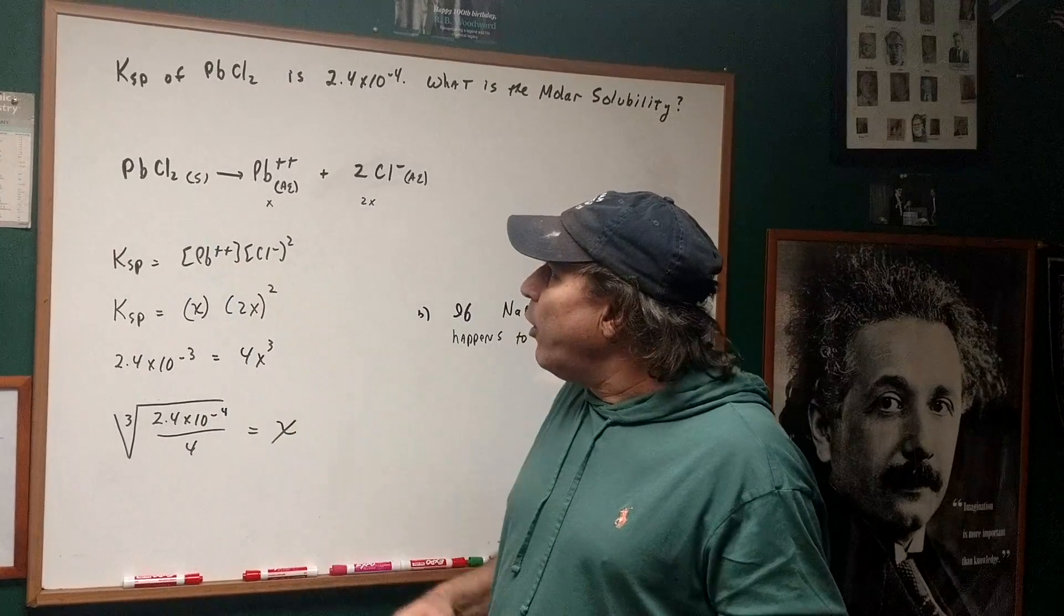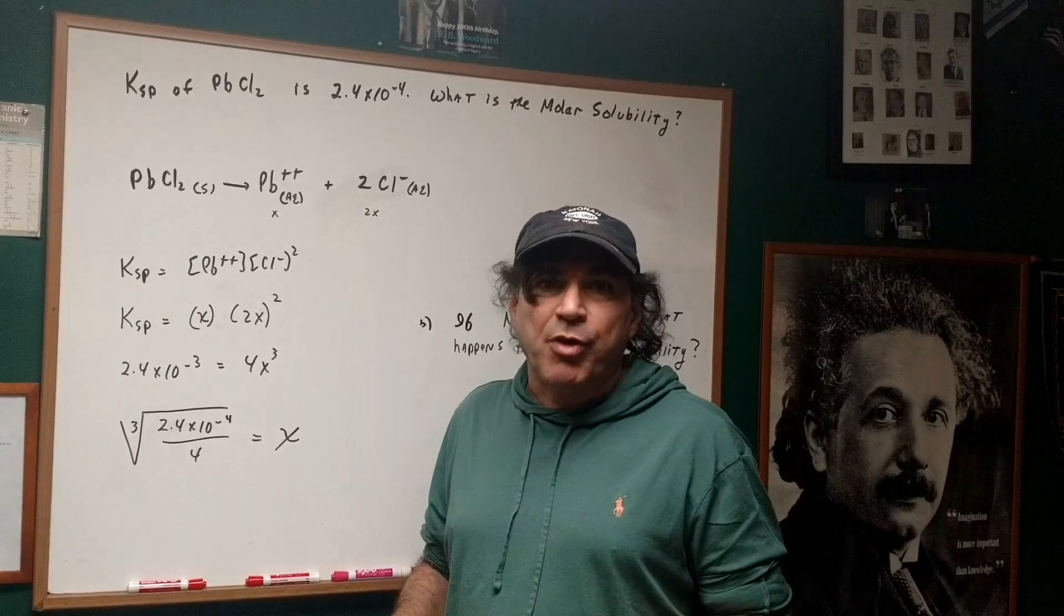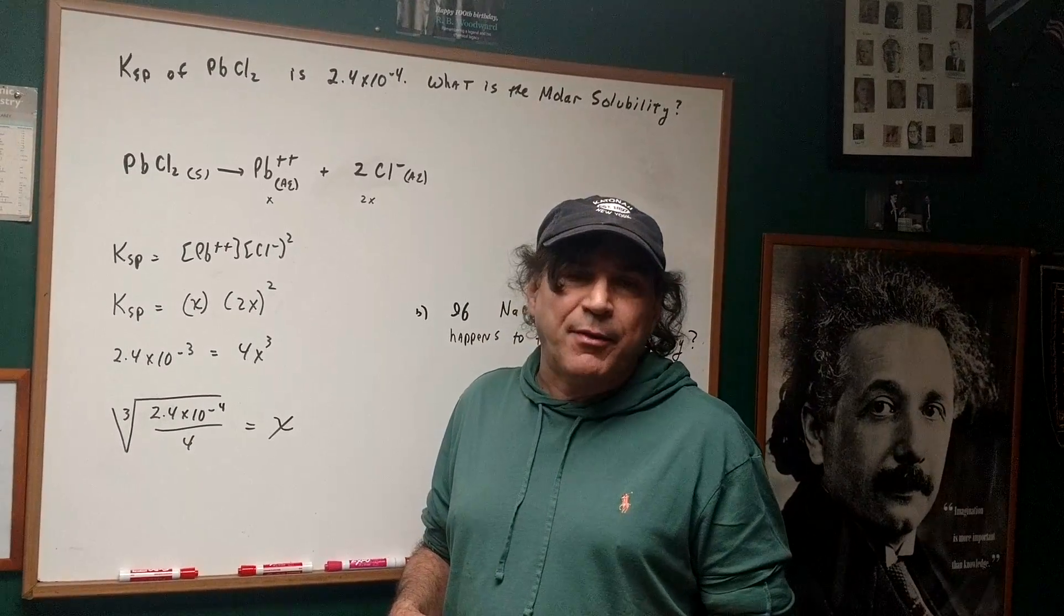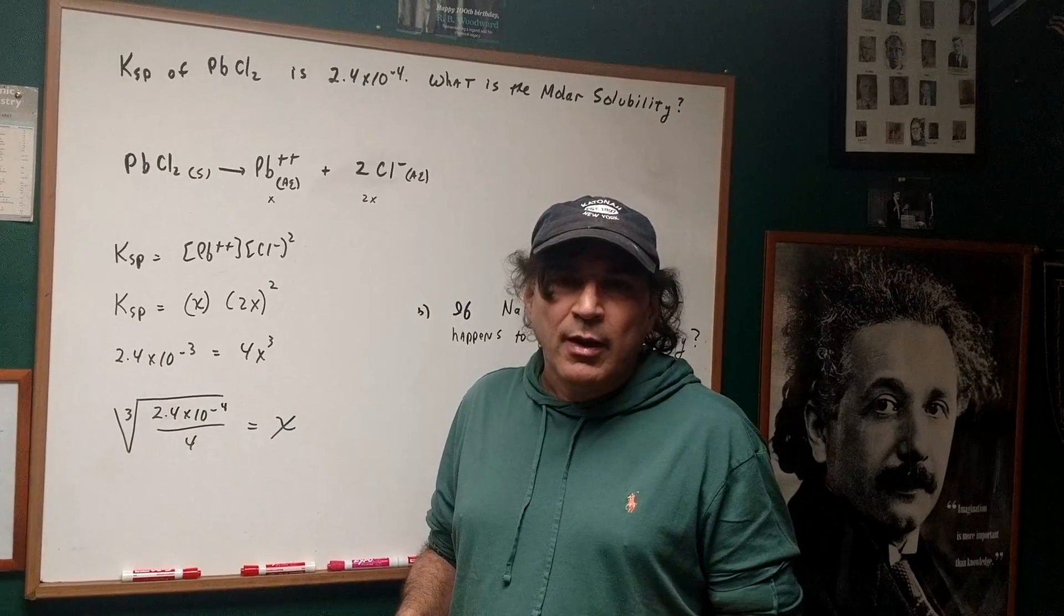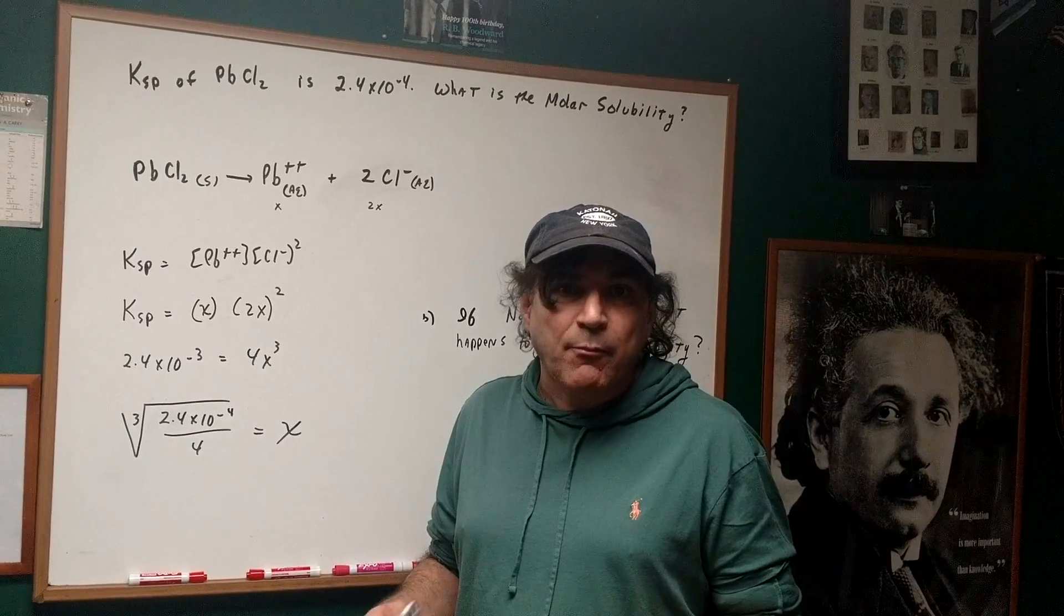We all know one of the solubility rules is that if you have a chloride, a bromide, an iodide, these guys are not very soluble if you see something like silver, mercury, or lead. But nevertheless, they're still somewhat soluble. Everything is somewhat soluble.